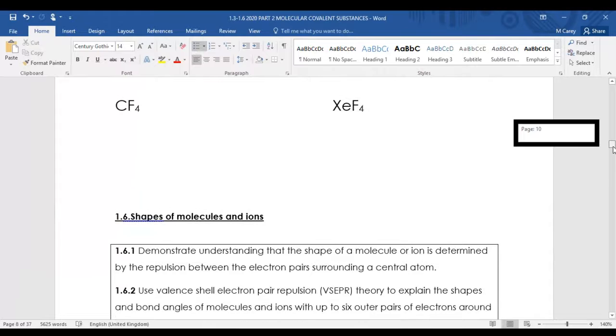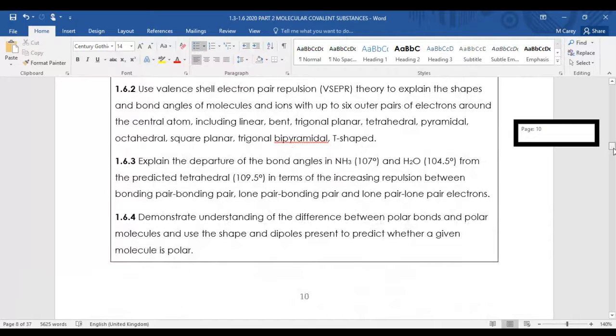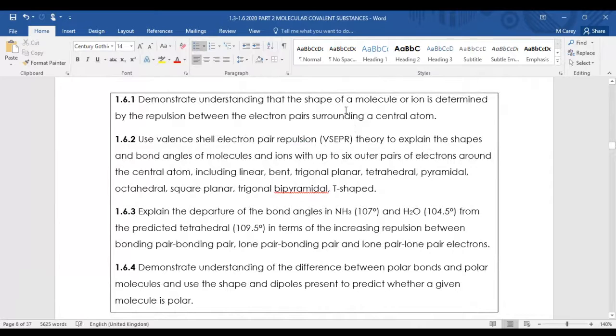We're going to move on to VSEPR and the shapes of molecules and ions. If you look at the specification points, demonstrate understanding that the shape of the molecular ion is determined by the repulsion between the electron pairs surrounding the central atom. Molecules adopt a shape that minimizes repulsion between the electron pairs. We're going to look at valence shell electron pair repulsion theory to explain the shapes of molecules.